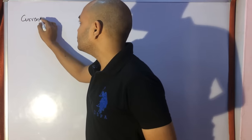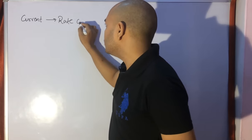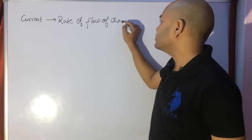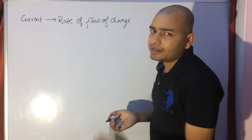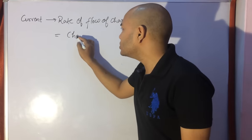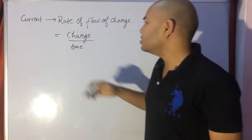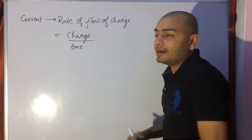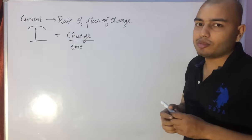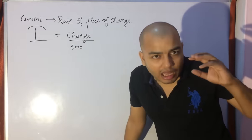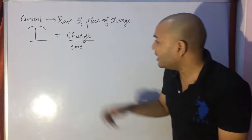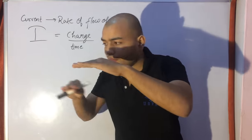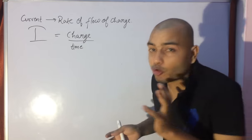Hello students, today I'll be talking to you about current and potential difference. Current is the rate of flow of charge. The speed at which charge flows is current. Current is the charge that flows in unit time — charge per unit time. Just like distance upon time gives us speed, charge upon time gives us current. The formula is: current I equals charge upon time.